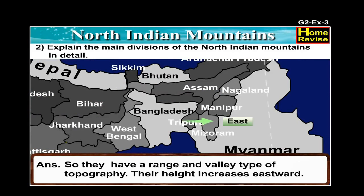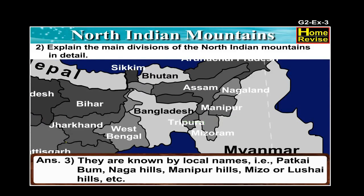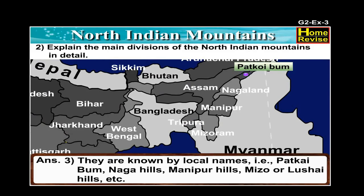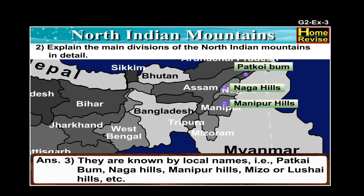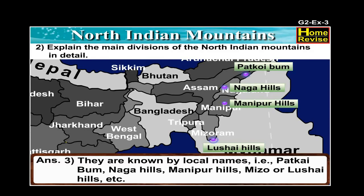Their height increases eastward. They are known by local names: Patkai Bum, Naga Hills, Manipur Hills, Mizo or Lushai Hills, etc.